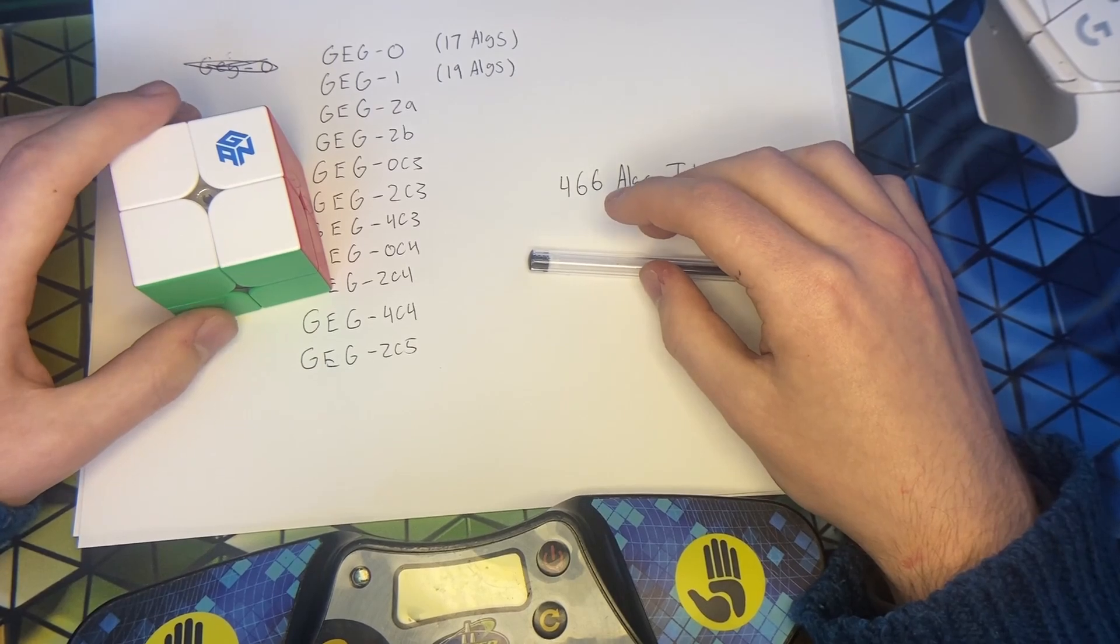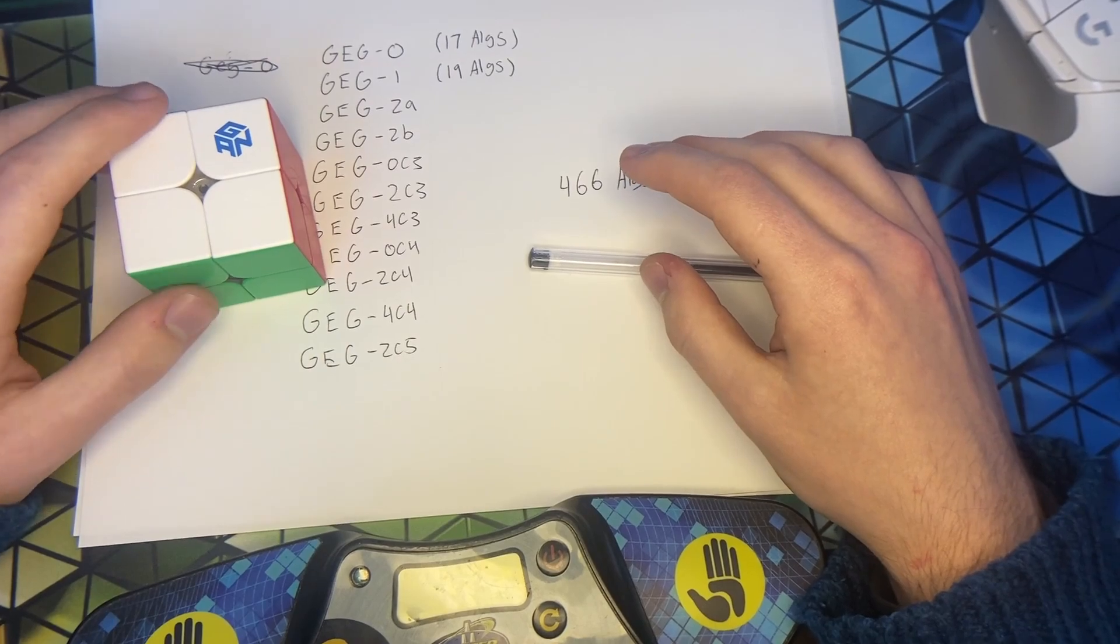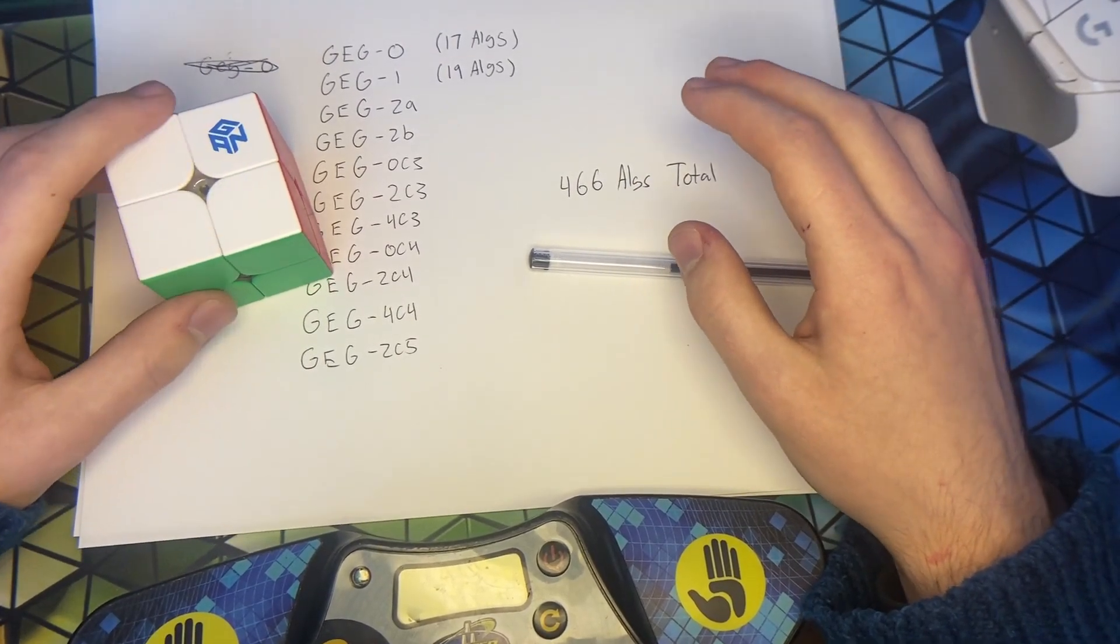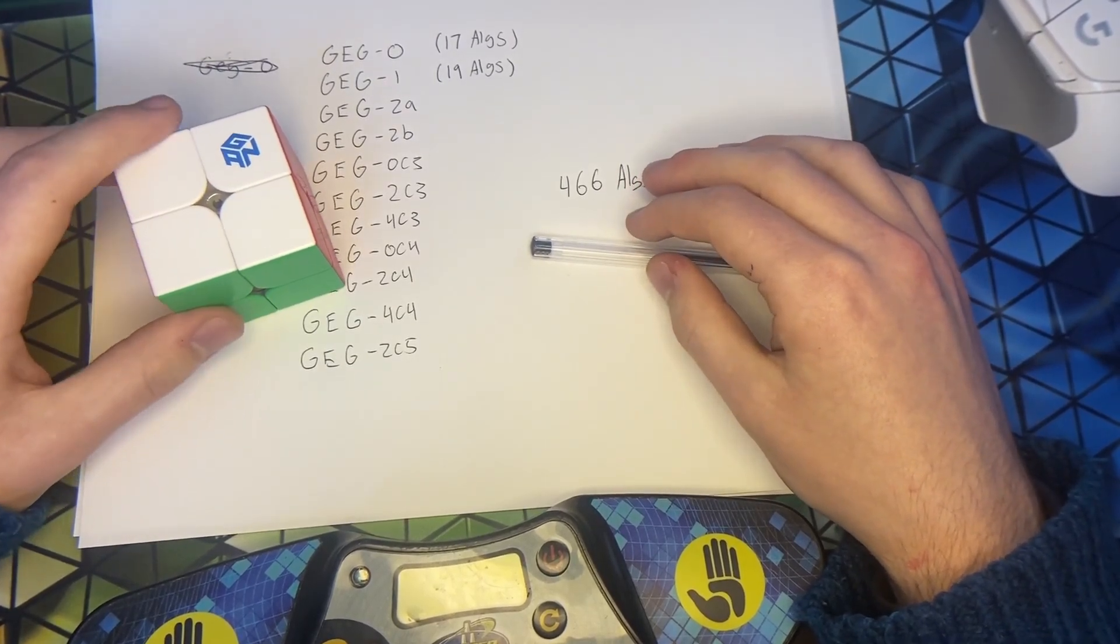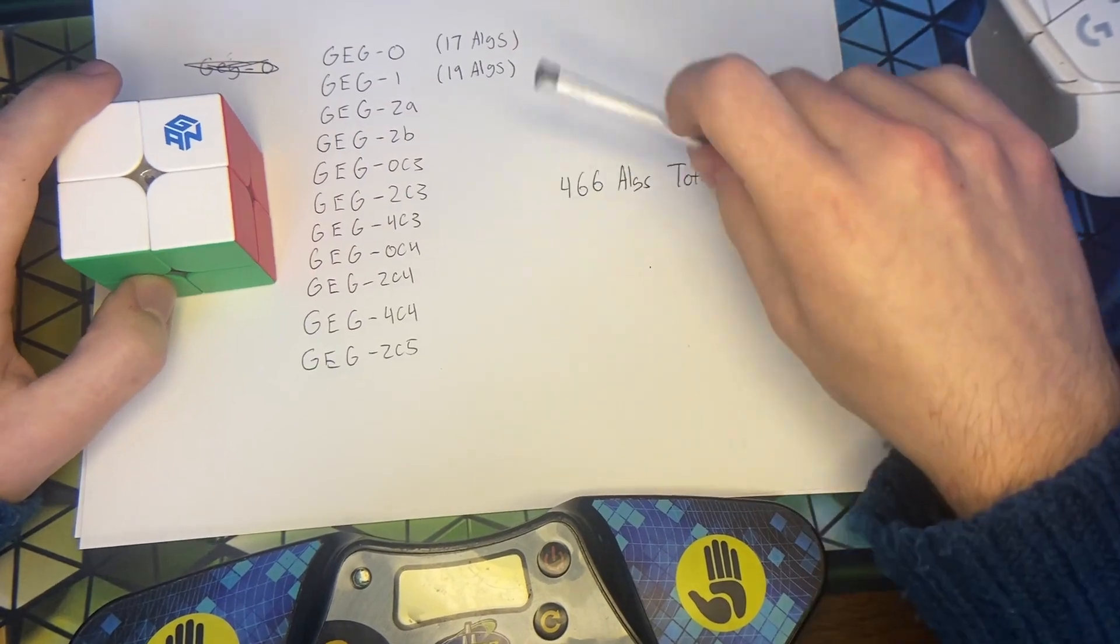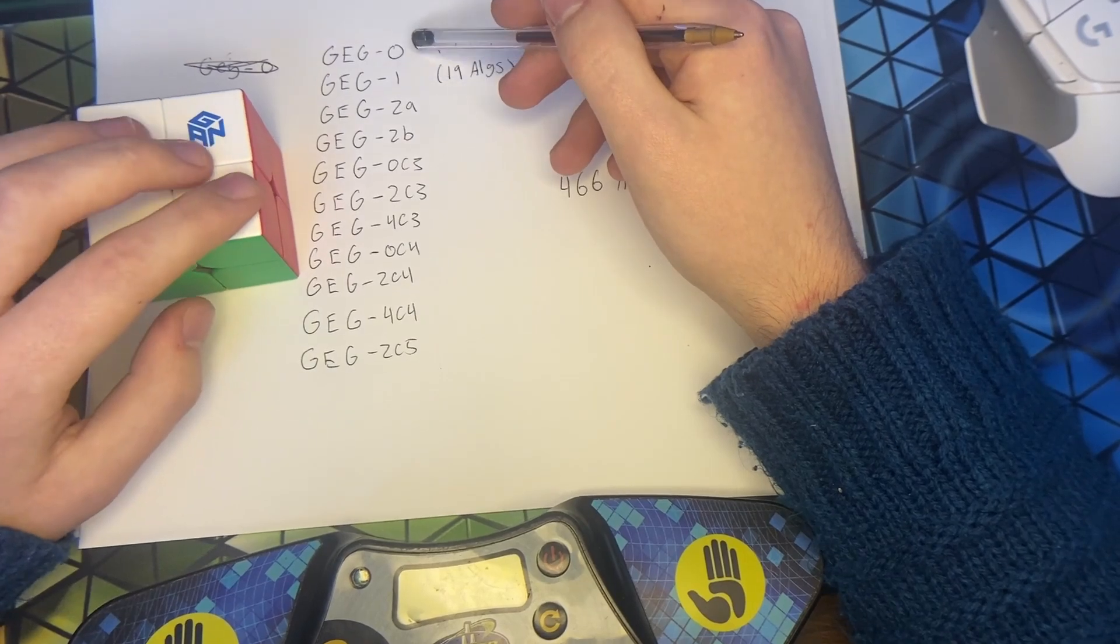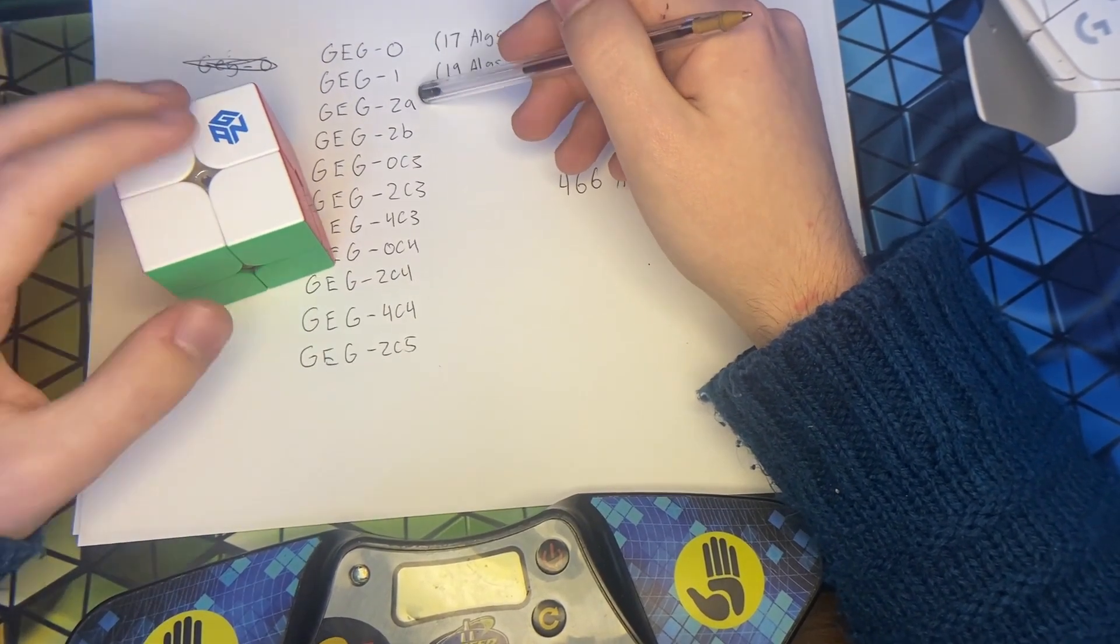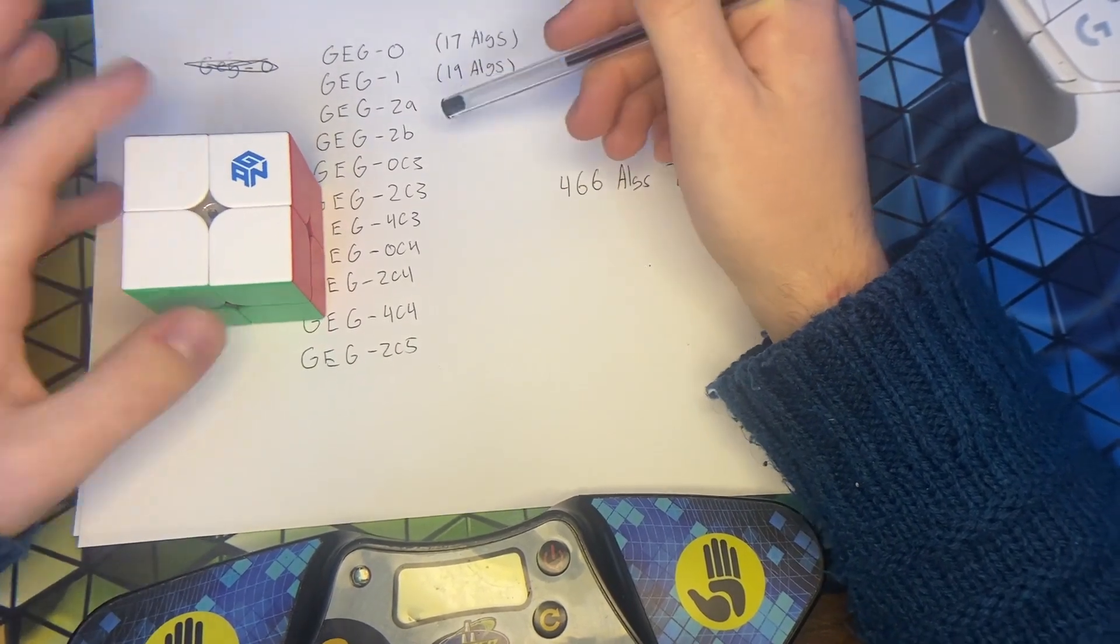So, thank you so much to Jules. And thanks to him we have this giant text file in the description, which is linked in the description. Which contains an alg for every single possible state. Sorted into how many quarter turns they require.